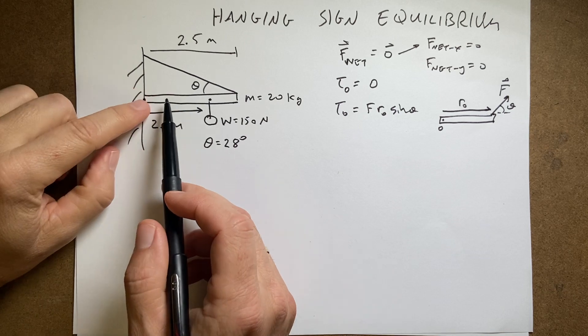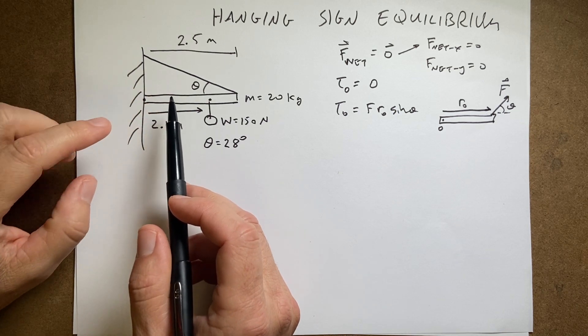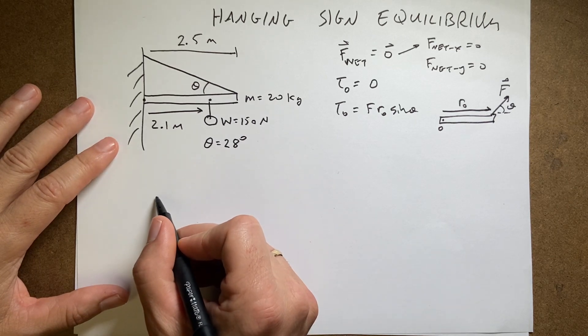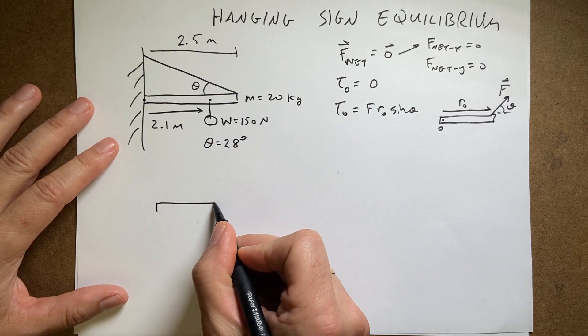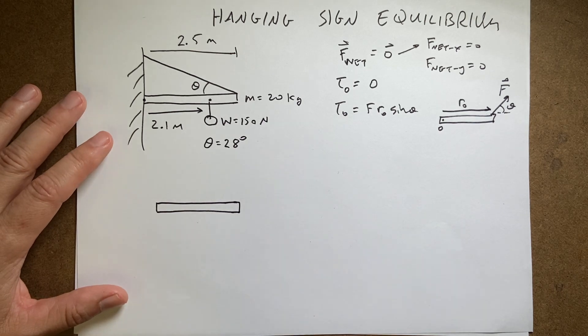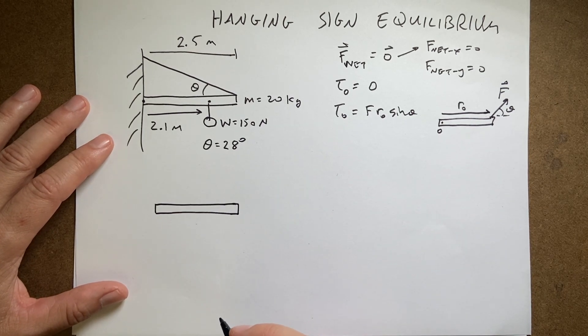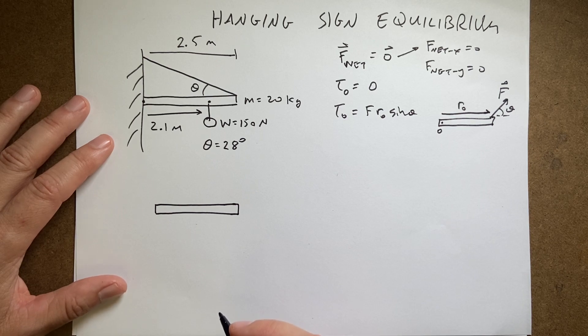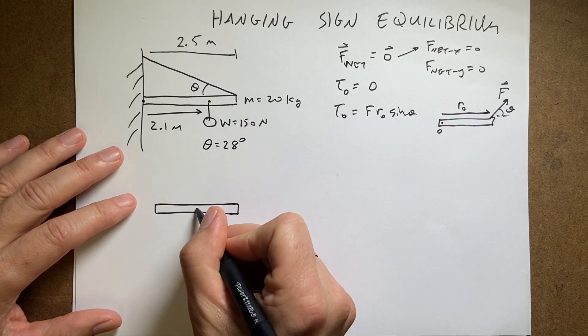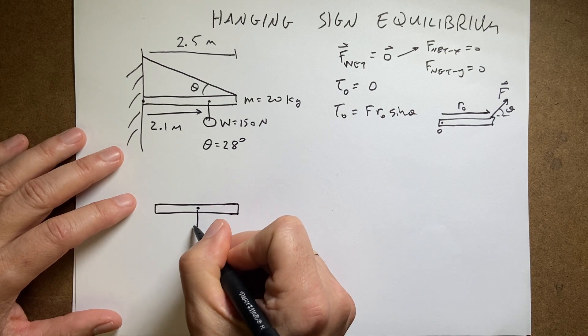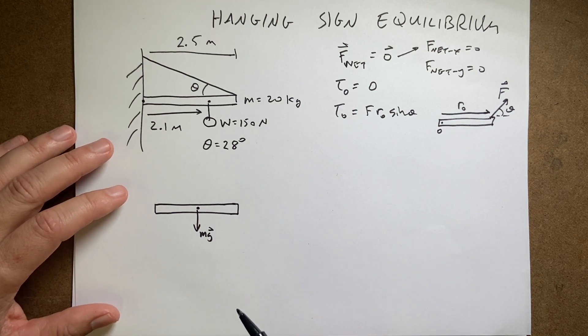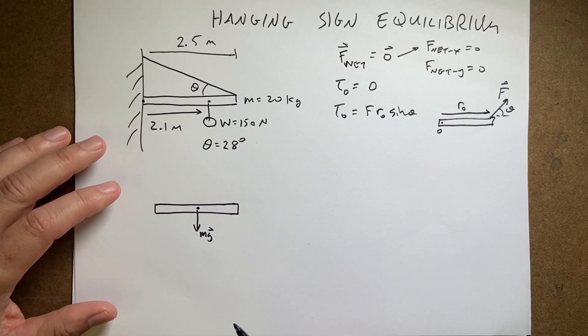So the first thing we want to do is to pick our object and draw all the forces acting on it. So I'm going to just use the beam because the beam is in equilibrium. I'm going to draw the beam and all the forces acting on the beam. So here's my beam. The first force I have, it's a uniform density beam. So that means that it has a gravitational force that pulls on the whole thing, but I can apply a gravitational force at the center as though it were acting, even though it's acting everywhere, I can apply it at the center as though that were the one single force.